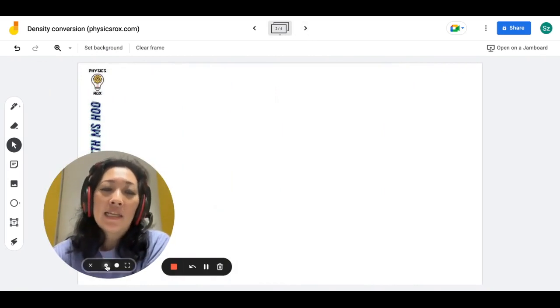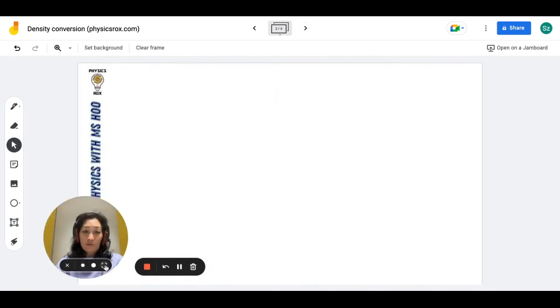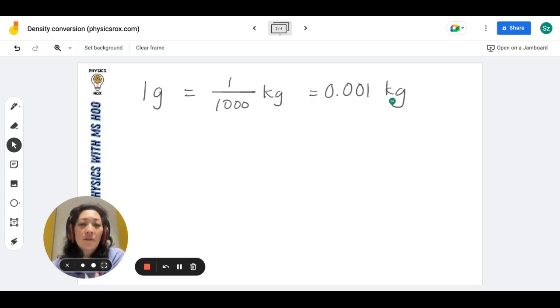Now, this is a common point of confusion because a lot of students only remember to convert mass. So let's write this down really quickly. We know that 1 gram is equal to 1 out of 1,000 kilograms, or some of you like to write it in the 0.00 method. So that's 0.001 kilograms.